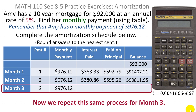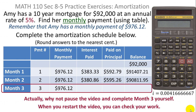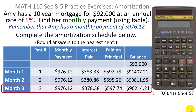Now we want to do it for month three, but pause the video here and try to finish it yourself. Compare your answers to mine. For month three, the amount of interest paid was $378.38, the amount paid on principal was $597.74, leaving a balance at the end of three months of $90,214.21. If you didn't get those values, go back and check your work, or rewatch the earlier part of the video to make sure you understand the calculations.